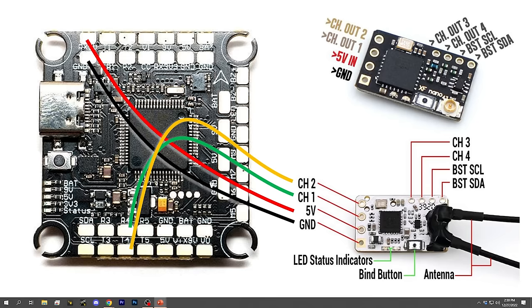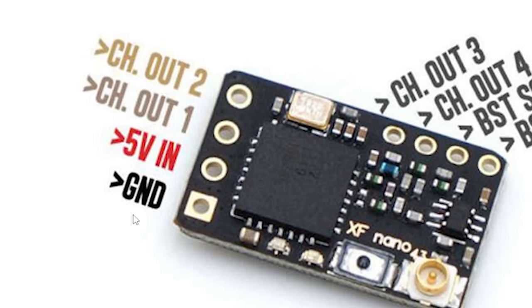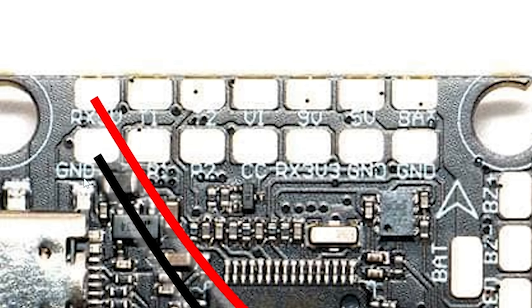Here's how to wire up a TBS Crossfire or Tracer Nano receiver to your flight controller. The pinout is identical between the Crossfire and Tracer receiver, so the process of wiring and configuring is the same for both. To identify the pinout, first find the ground pad — the square pad at one end — and then from there: ground, 5 volts, output 1, and output 2. The ground pad goes to any ground pad on your flight controller. Check your FC's user manual or wiring diagram, as there may be a specific place they expect you to connect the receiver.